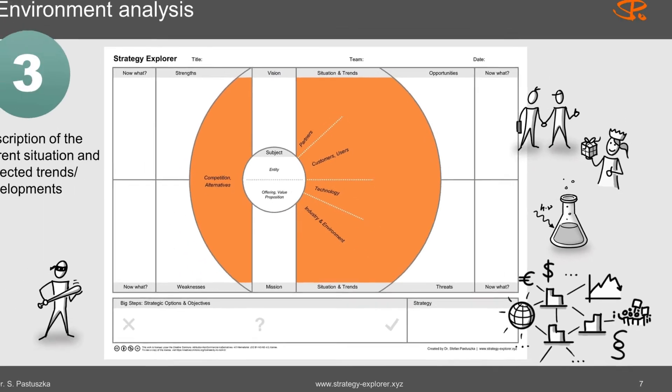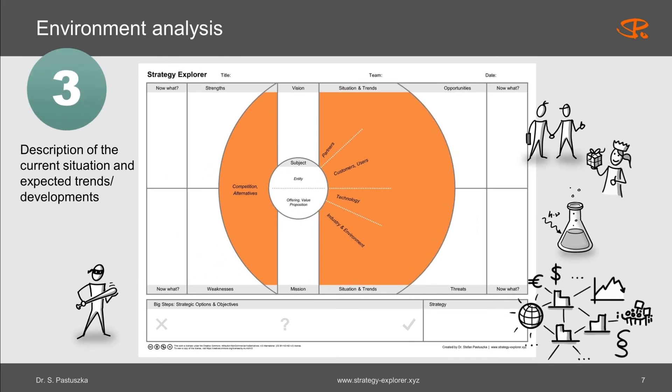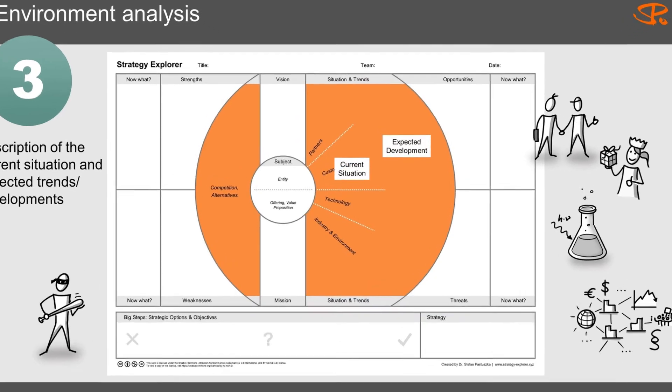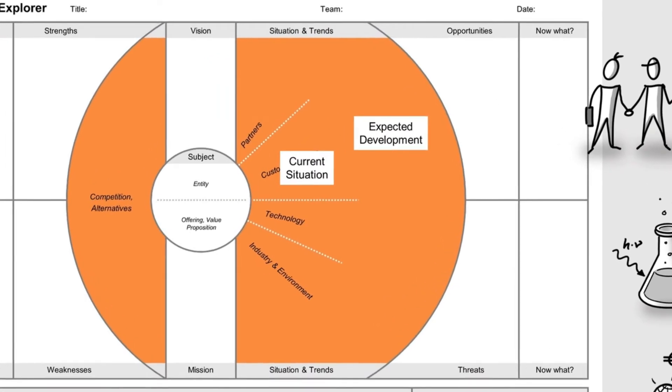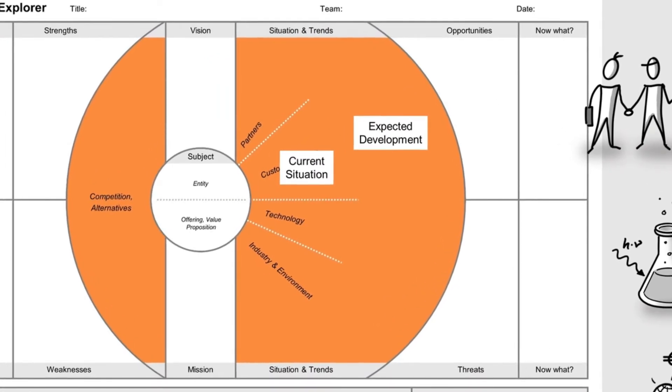As space is limited, focus on the most important facts and developments. If you have too many ideas, collect them separately and then transfer the most relevant to the Strategy Explorer. Place the observations of the current situation close to the center and the expected developments rather towards the outside of the circle.